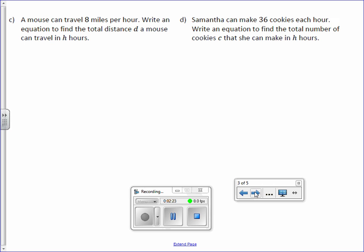Letter C. A mouse can travel 8 miles per hour. Write an equation to find the total distance D a mouse can travel in H hours. Total distance is D equals 8 miles times hours. So D equals 8H.